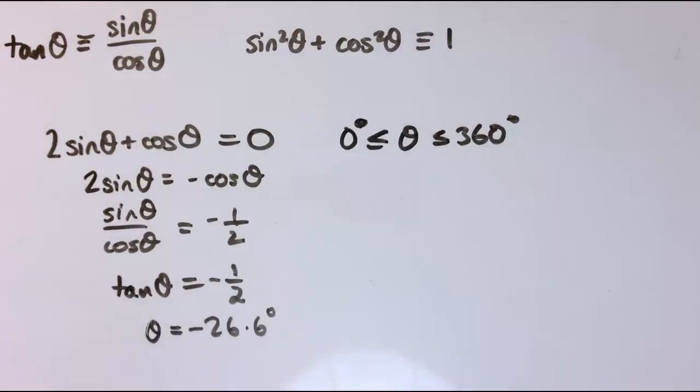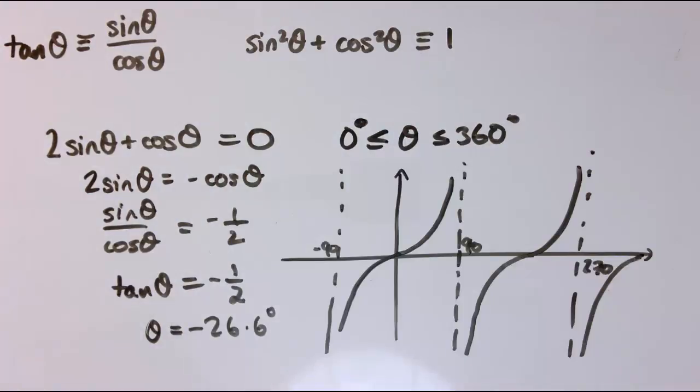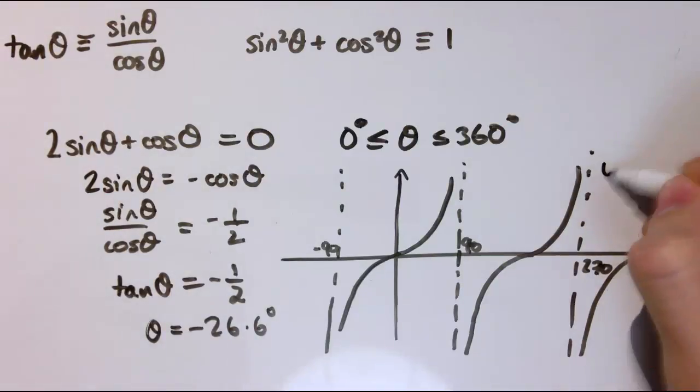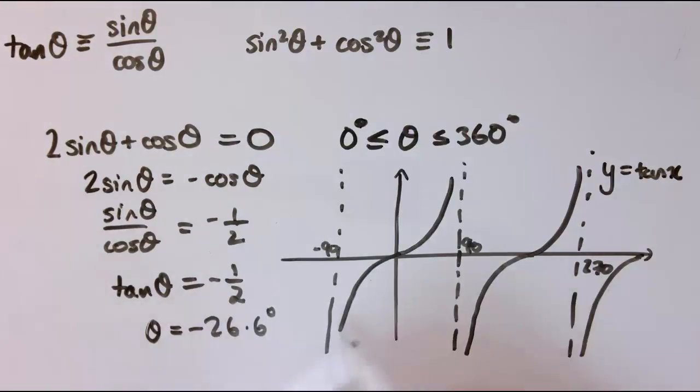So we need to know what the graph of tan θ looks like. This is what the graph looks like, y equals tan x here. So minus 90 degrees here, 0, 90 degrees, 180 degrees, 270, 360 degrees, and tan θ repeats every 180 degrees.